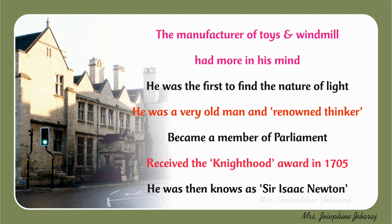In 1684, a scientist urged him to write about how a planet moves in a certain orbit. So he published a three-volume book known as Principia in the year 1687, which detailed the laws of motion and the law of universal gravitation. In 1703, he was elected as the President of the Royal Society of London. Then he published his writings on his early experiments with light in a book called Optics.